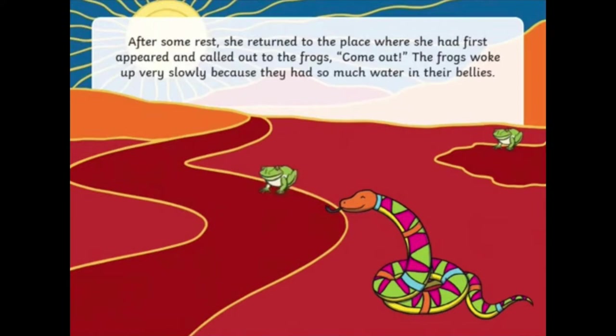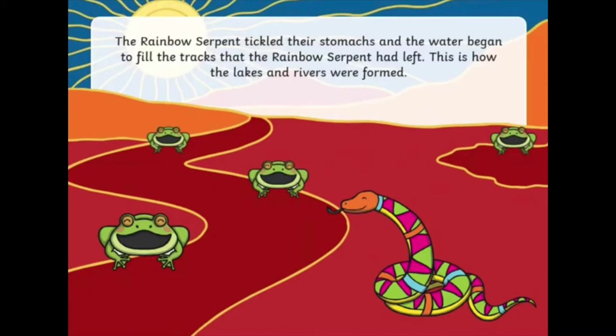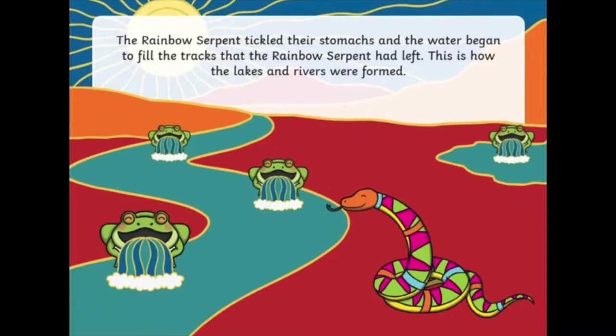The frogs woke up very slowly because they had so much water in their bellies. The rainbow serpent tickled their stomach and the water began to fill the tracks that the rainbow serpent had left. This is how the lakes and the rivers were formed.